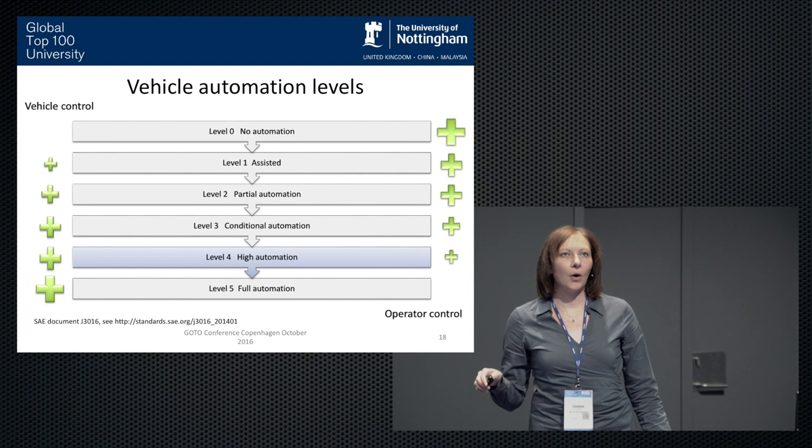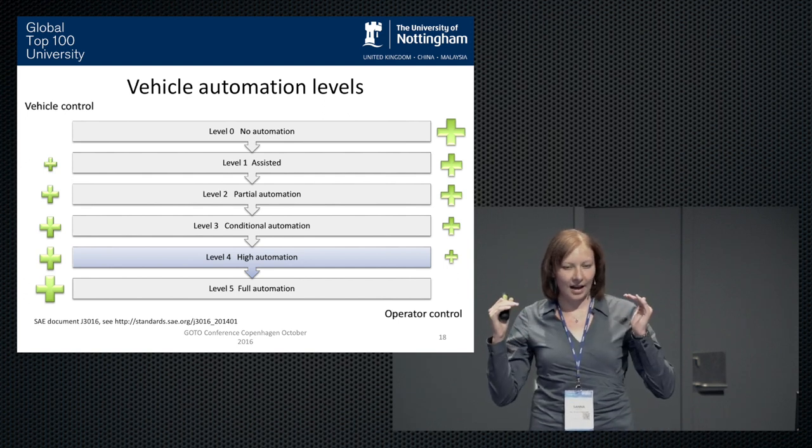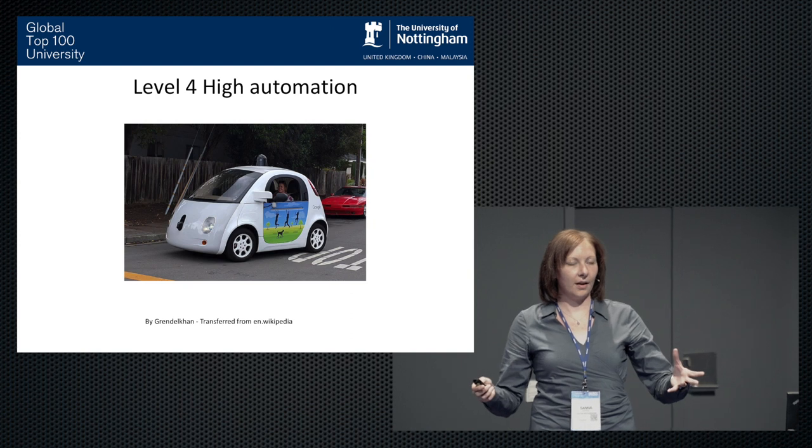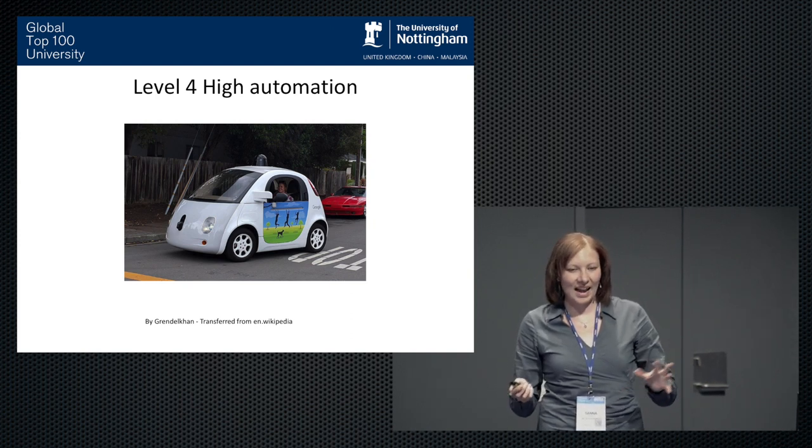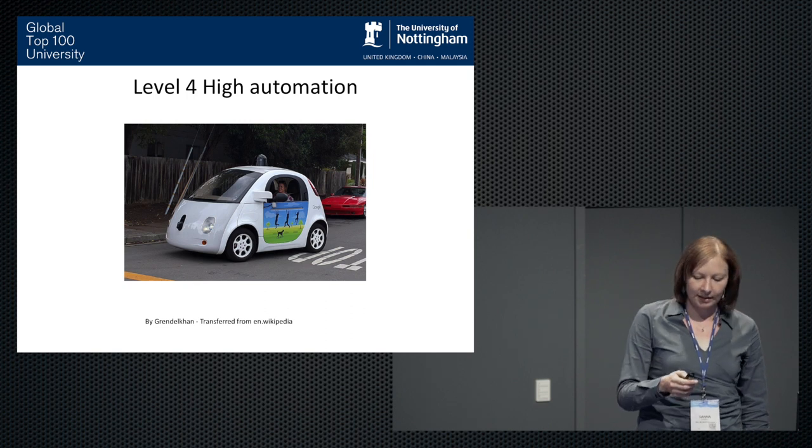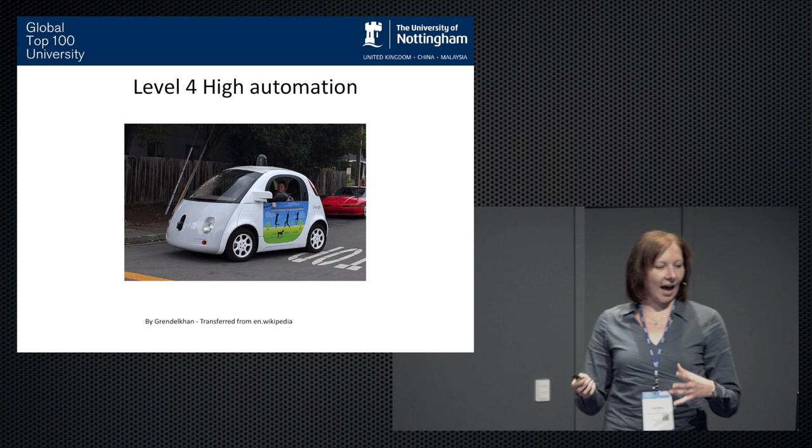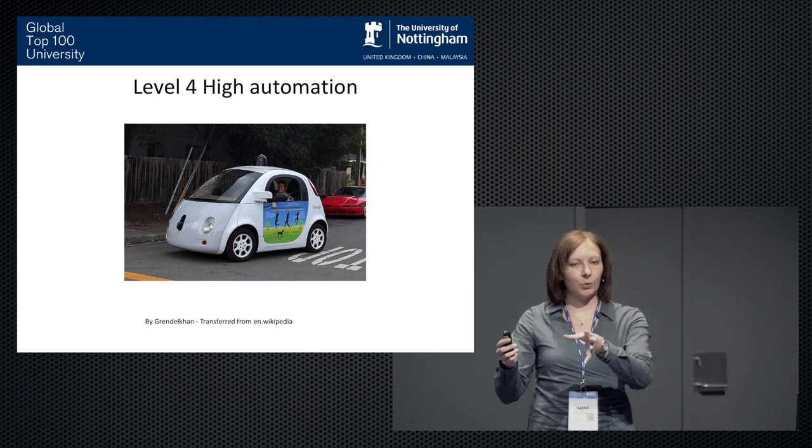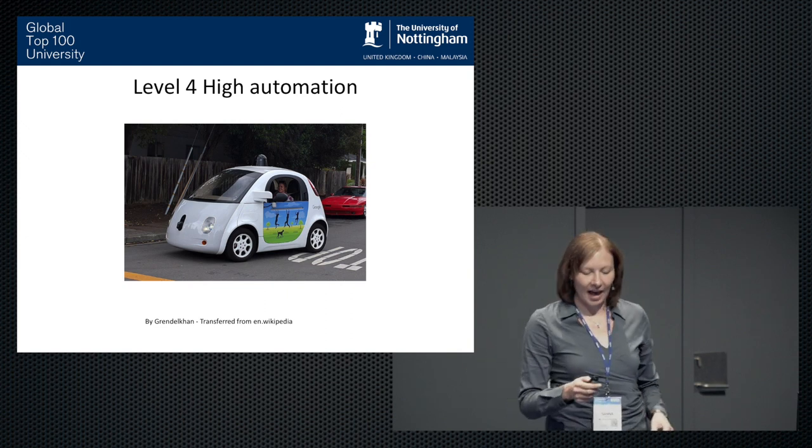When we talk about level four, we are not expecting the human being to be fully capable and able at all times to actually drive. There's a bit more tolerance and the driver might just be required at some points to take over some of the control. Or it might even be possible that the car is completely autonomous on the motorway only. As an example, I put up a Google pod, although there's still some discussion which car belongs exactly to which level. But it's expected that such cars can actually do quite a high level of automation already. Another example would be a highway pilot that is able to do ad hoc platooning to dock onto other cars on the highway on its own and dock off again.